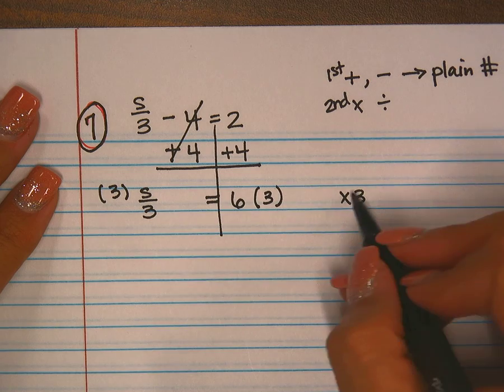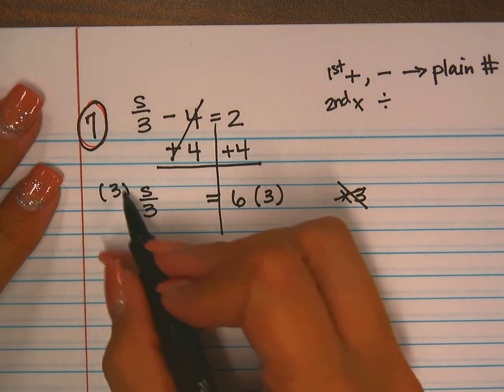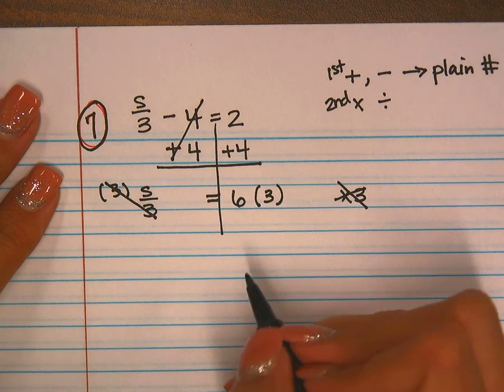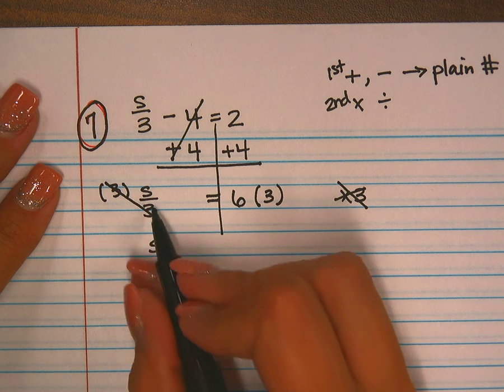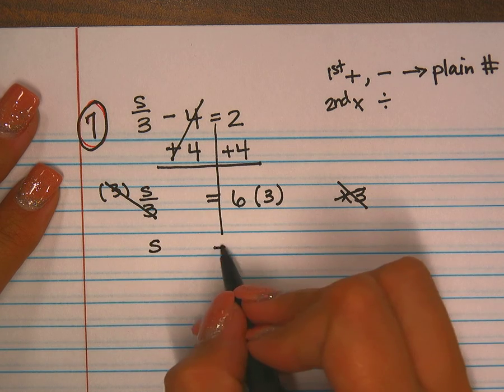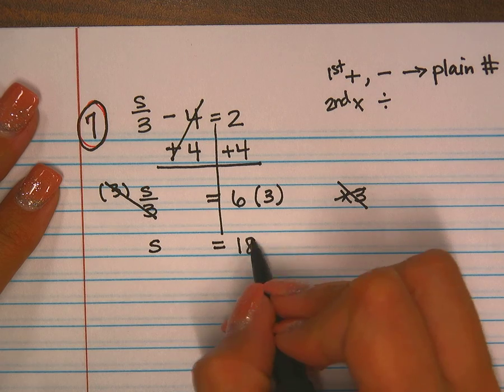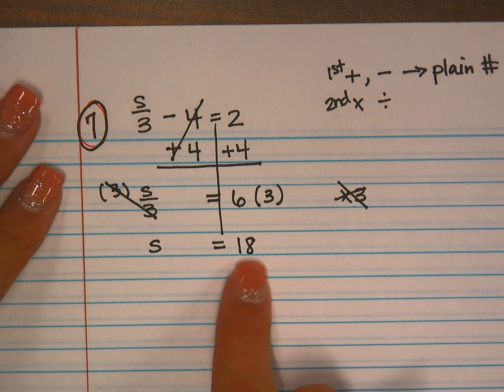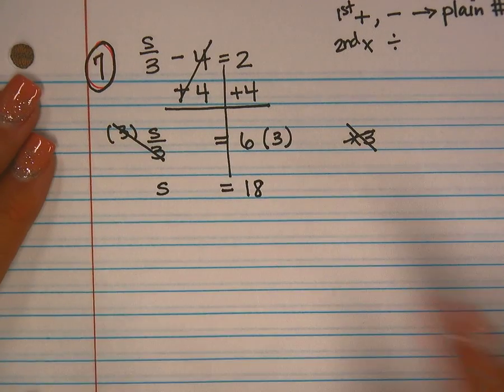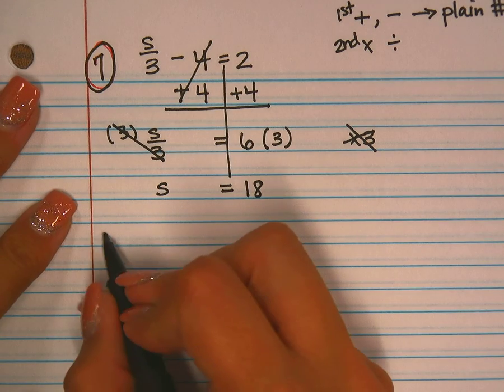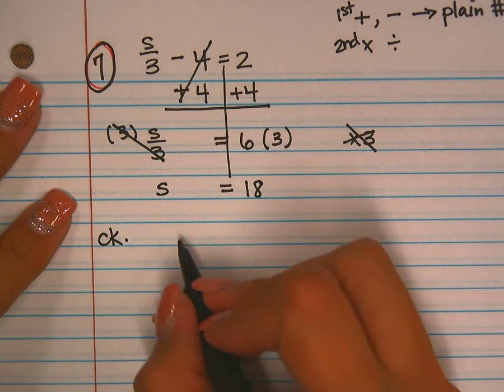This is three divided by three that cancels out to give me s. My equal sign comes down and six times three is 18. Now you might think, well, that's probably not right. Well, don't just think that, let's check it.